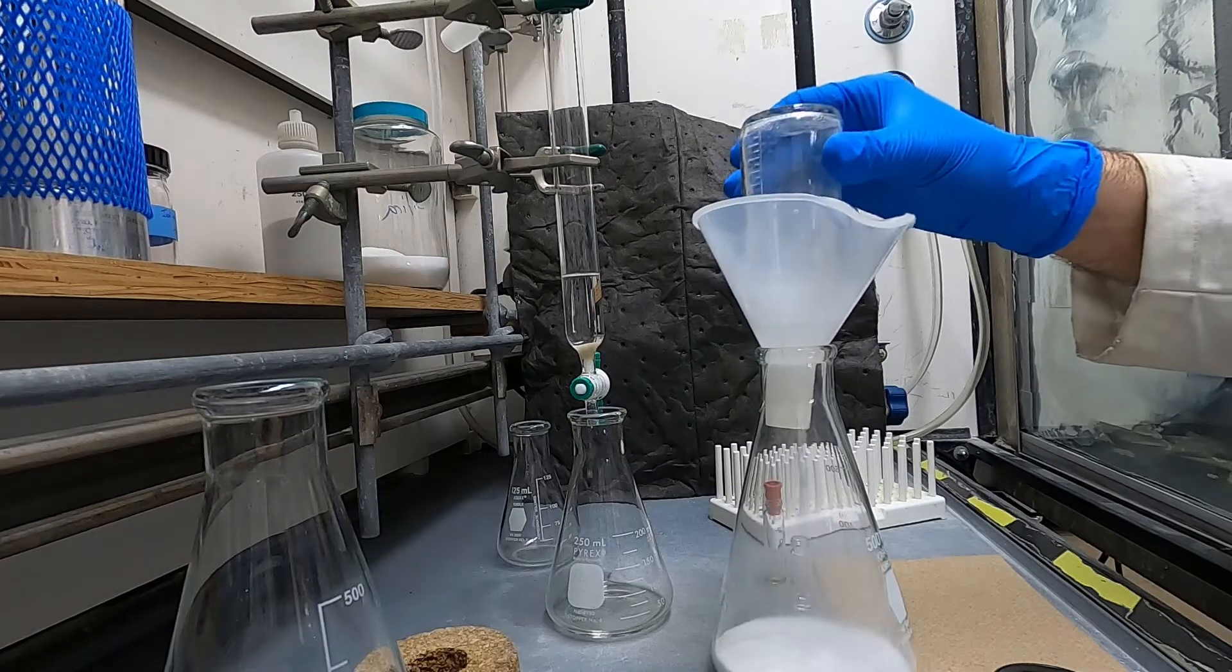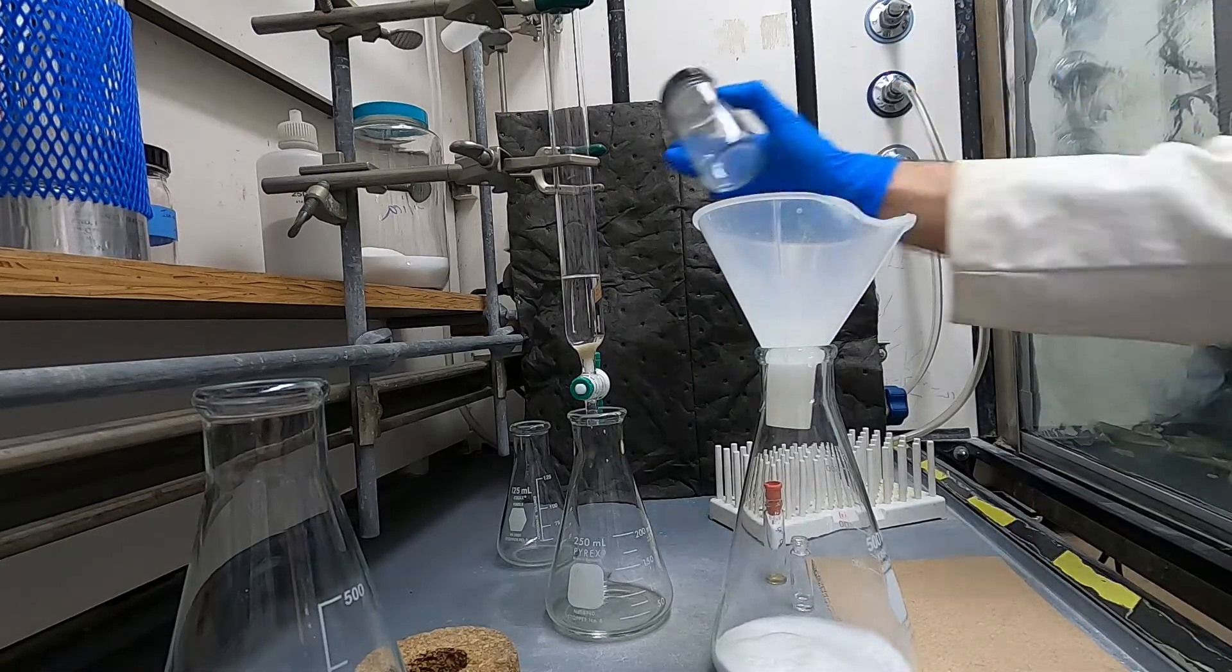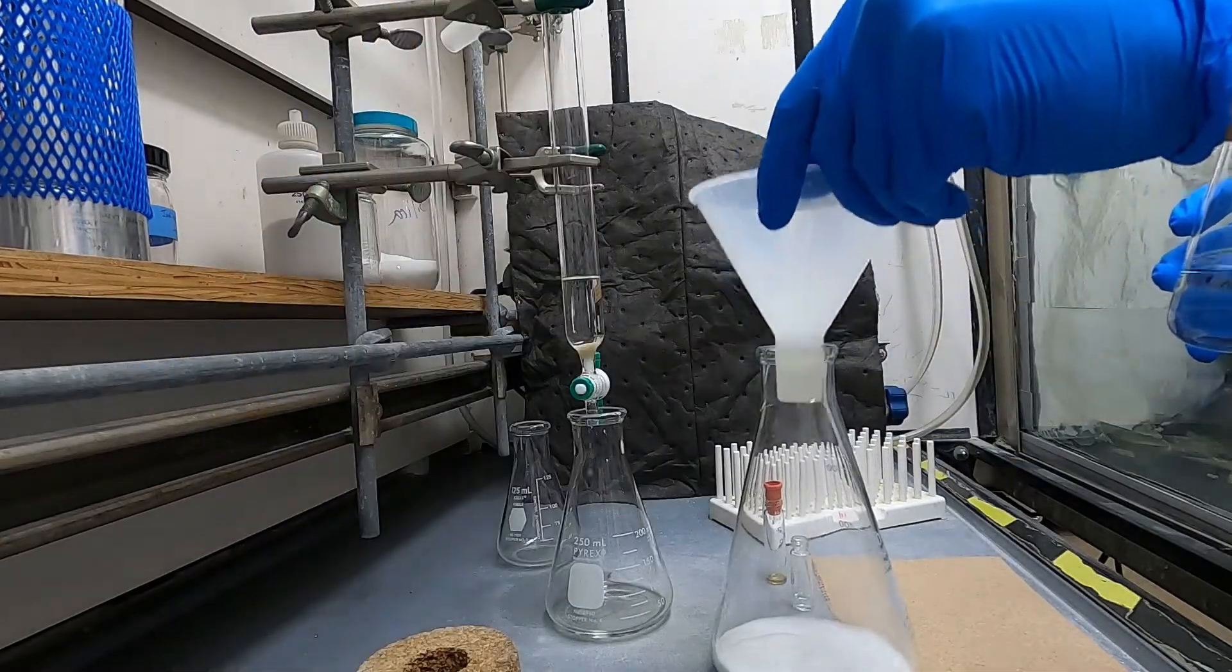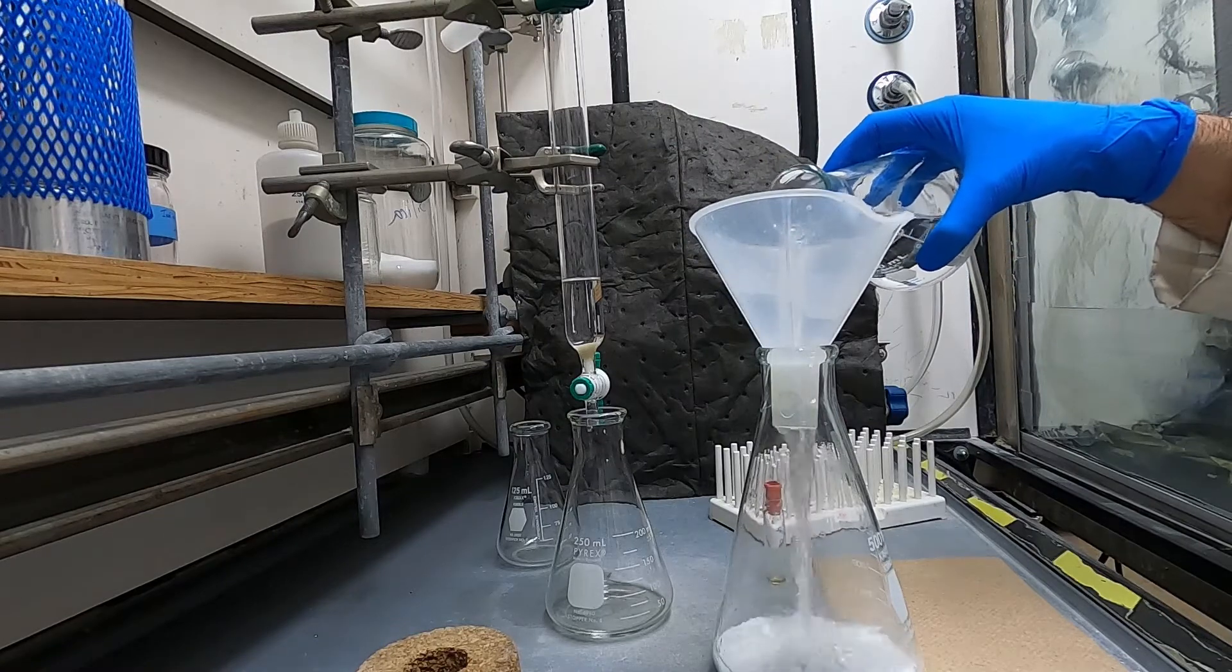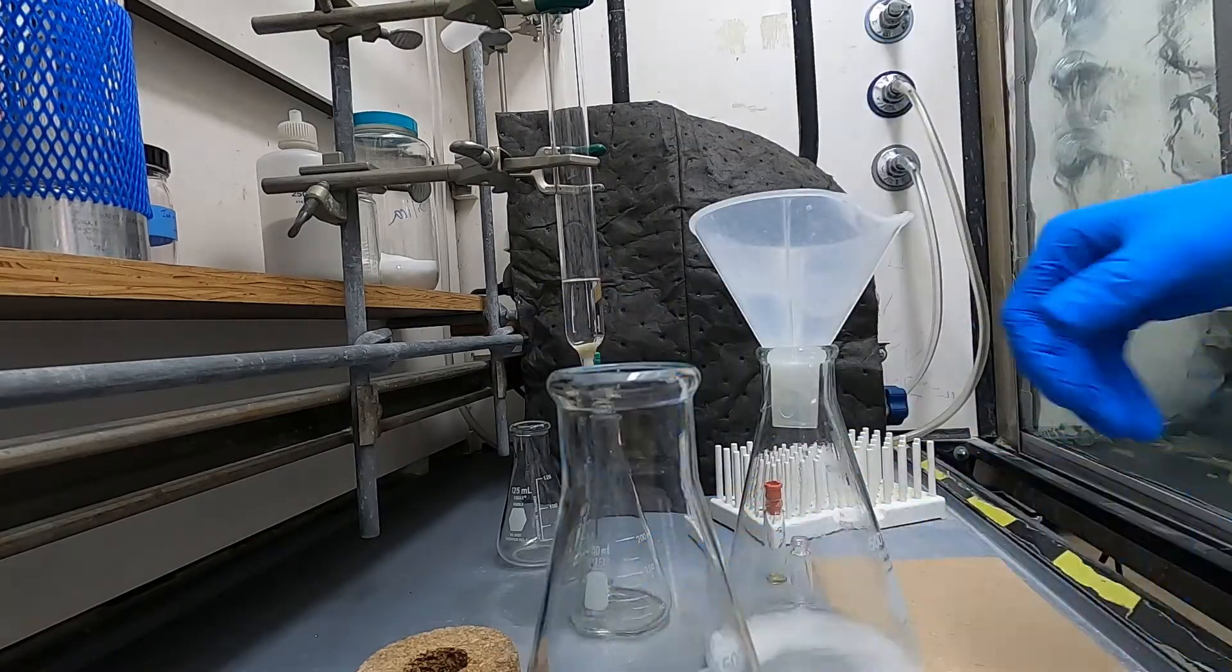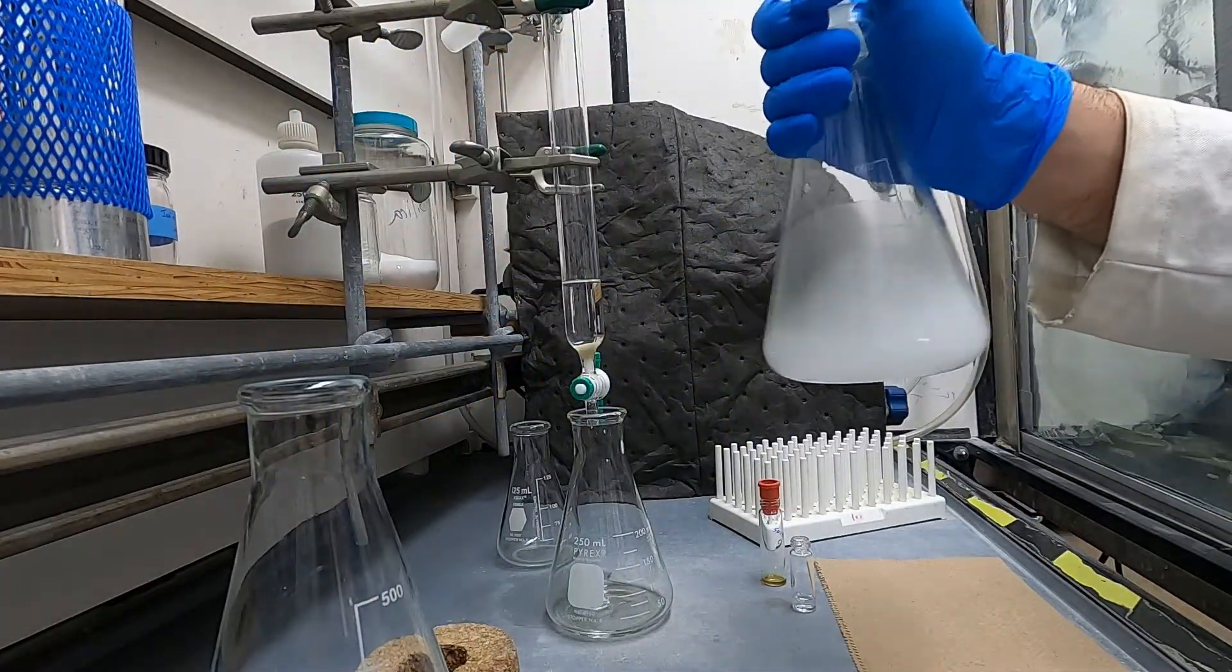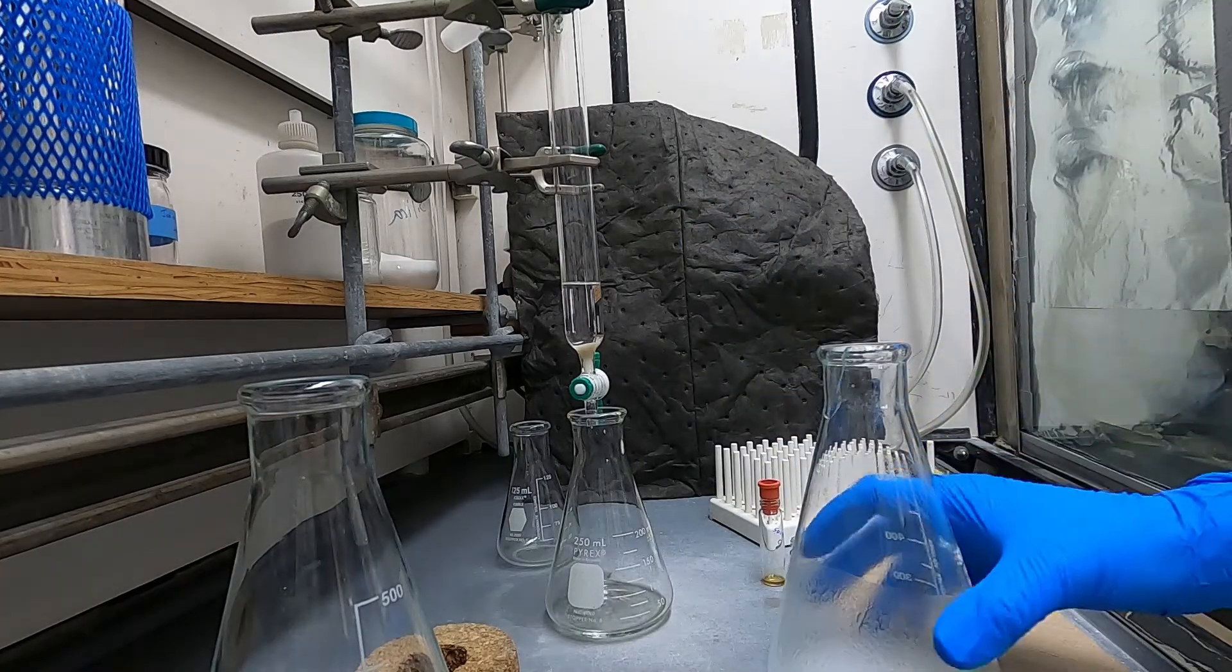So I pour my dry silica into an Erlenmeyer flask and then I will add some of my mobile phase which I've already previously determined a decent mobile phase for this isolation. Add enough so that you can make a slurry with the silica and then you'll add that to the top of your column.